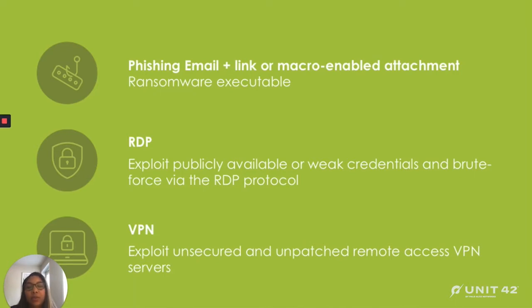Phishing emails will usually contain a link or malicious attachment that includes the downloader or the ransomware executable itself. Access via RDP is usually accomplished by the threat actor exploiting weak password security or by brute forcing. And access through a VPN has been a fairly new method, in that threat actors will exploit unsecured VPN servers and authenticate that way.